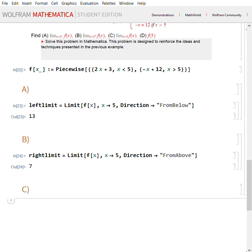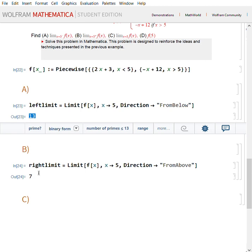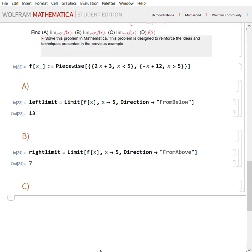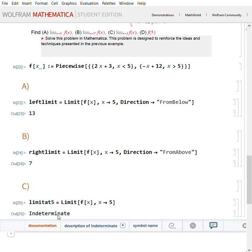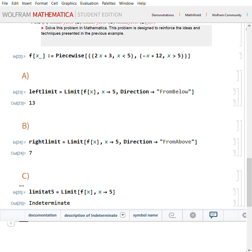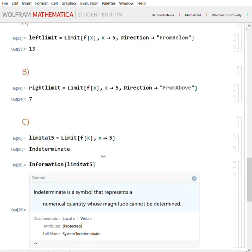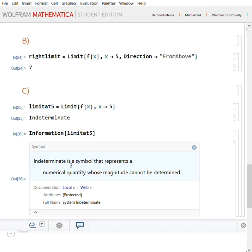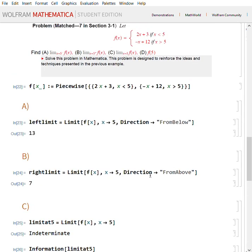Now they want the limit at 5. So we go ahead, I mean, right off the bat, we know that there is no limit since the left and right side don't match. But for the question's sake, we're going to go ahead and find the limit at 5. So we're going to say limit at 5, or you can skip that part. Shift enter, and you get that it's indeterminate. You can see how you can also get extra suggestions from Mathematica that describe what indeterminate is. Indeterminate is a symbol that represents a numerical quantity whose magnitude cannot be determined, which I guess is nice to have.